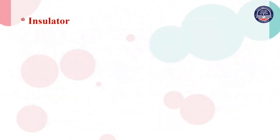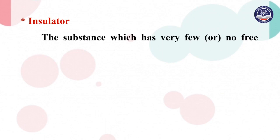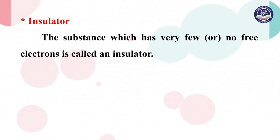Now, insulators: a substance which has very few or no free electrons is called an insulator.